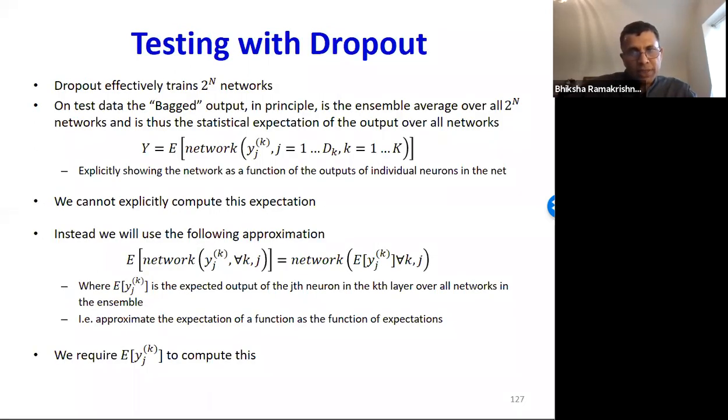Now, dropout effectively trains two raised to n possible networks. So on the test data, the bagged output is in principle the ensemble average over all two raised to n possible networks. It's the statistical expectation of the output of the networks as shown in this equation. Here E is the expectation operator and this expectation is taken over all two raised to n networks. The problem is this expectation is computed over all two raised to n networks. And so for even small networks with, say, a thousand neurons, you'd have to take the expectation over two raised to thousand networks and this is not going to be feasible.